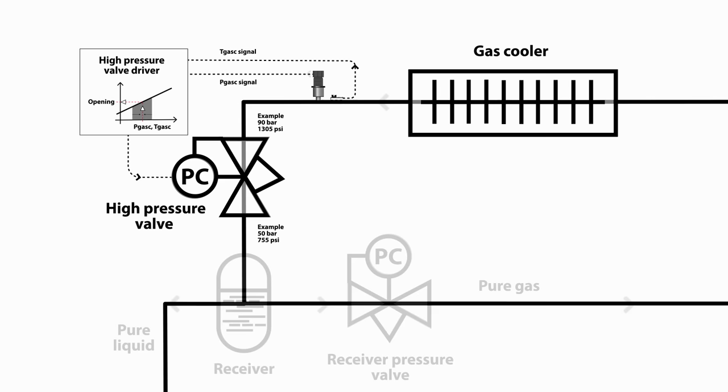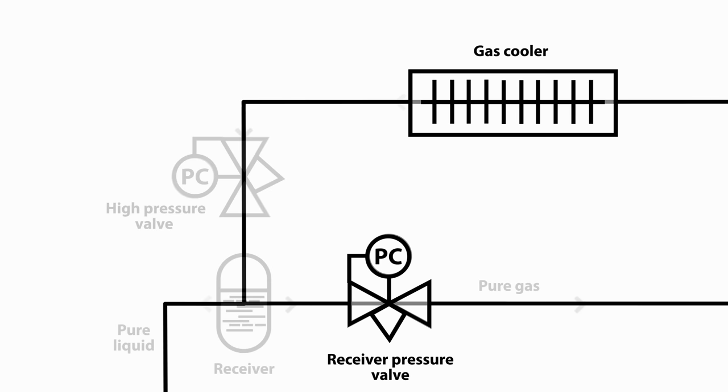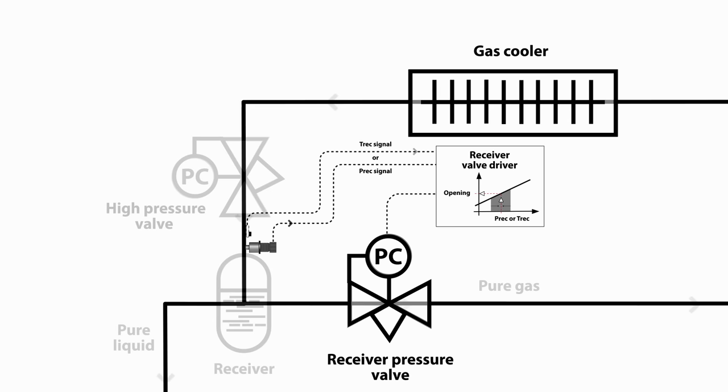The receiver pressure regulator is no different from the HP valve. It's the same type of valve. Sensors report to the electronics what the current situation is and the algorithm in electronics decides what the valve should do.